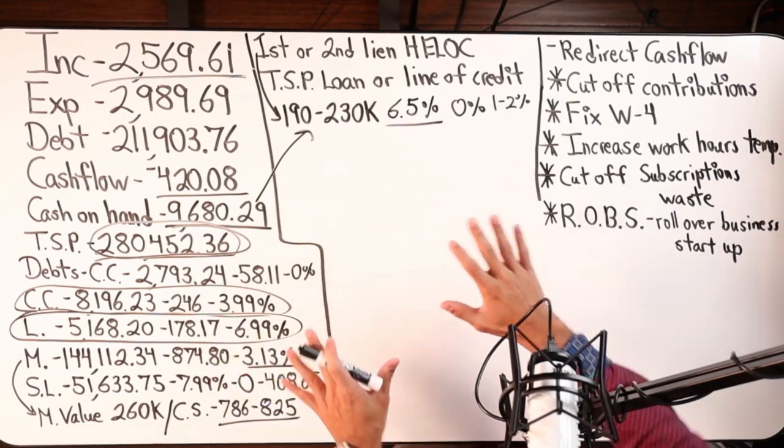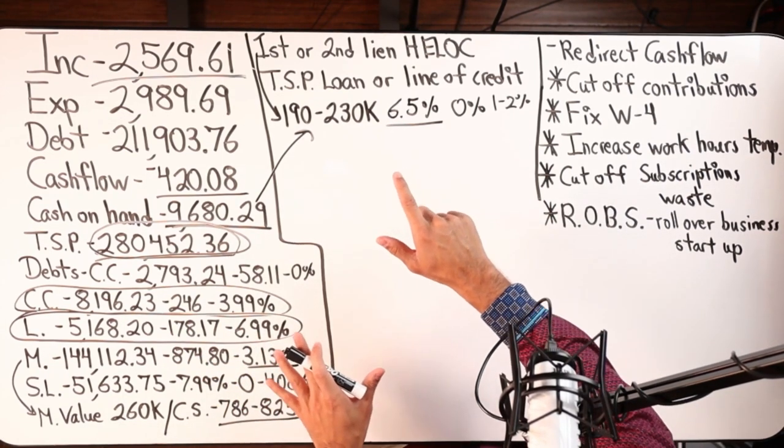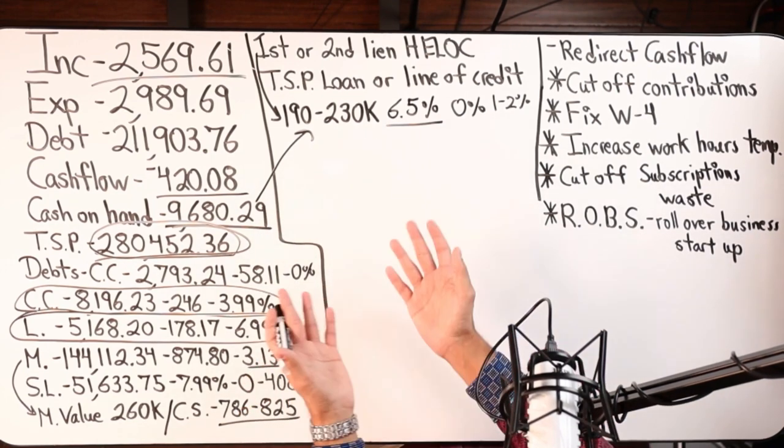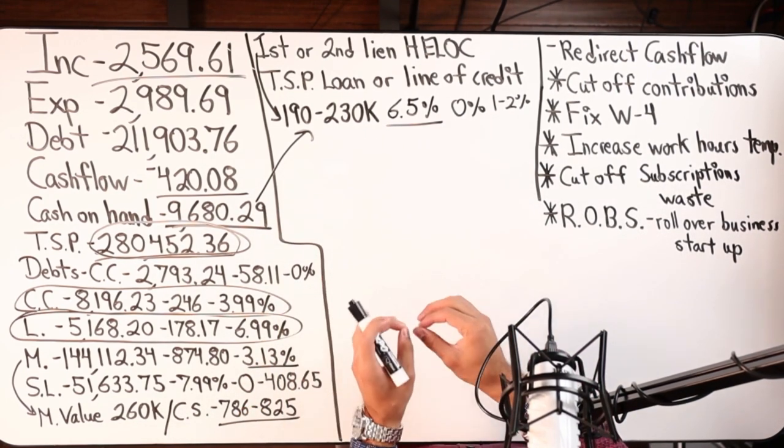So this is what I see so far. They could go the first lien HELOC route. In addition, they could maybe get the TSP loan - that's also on the table.